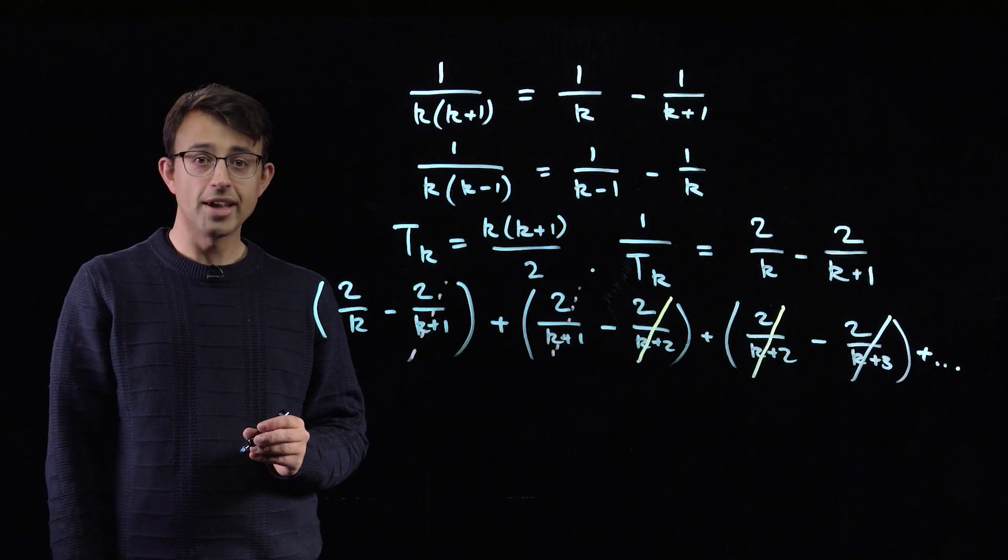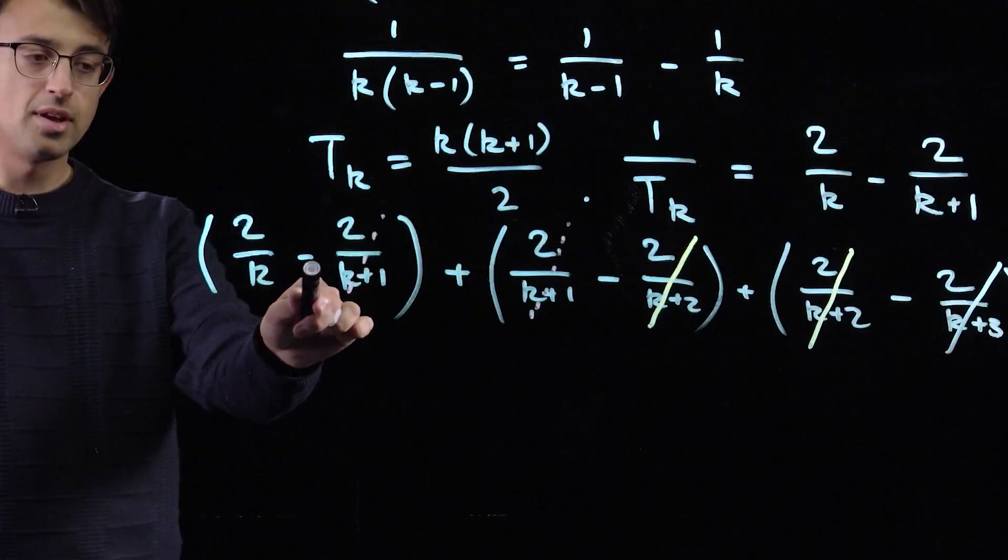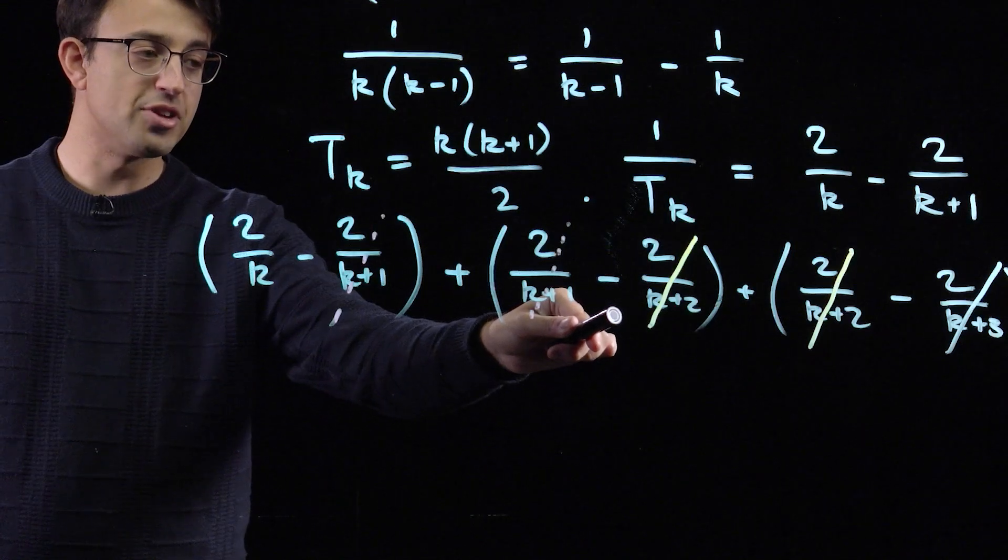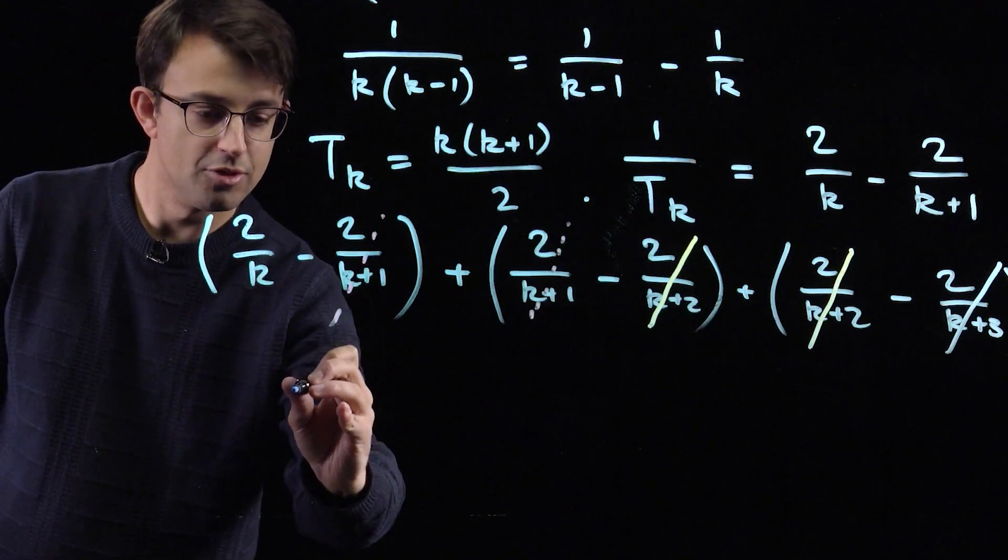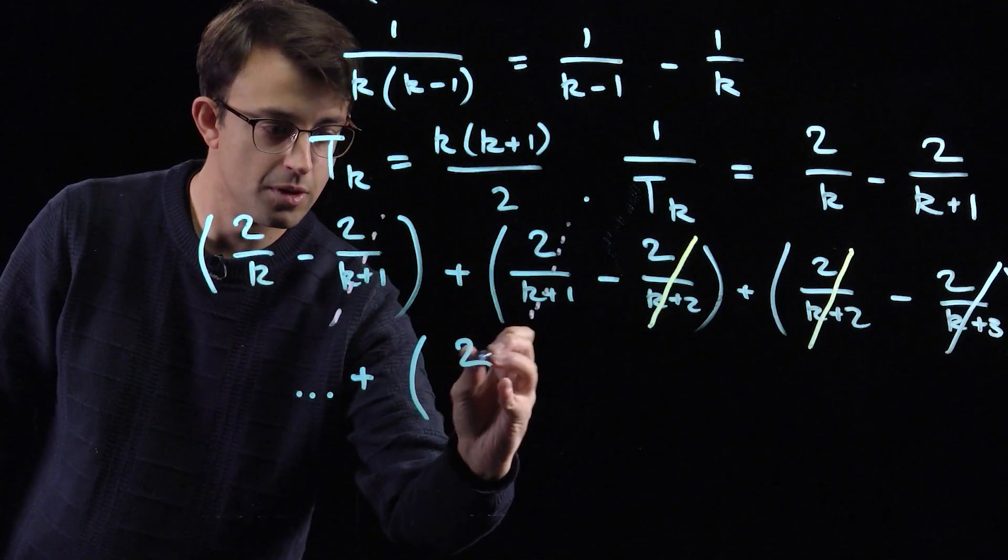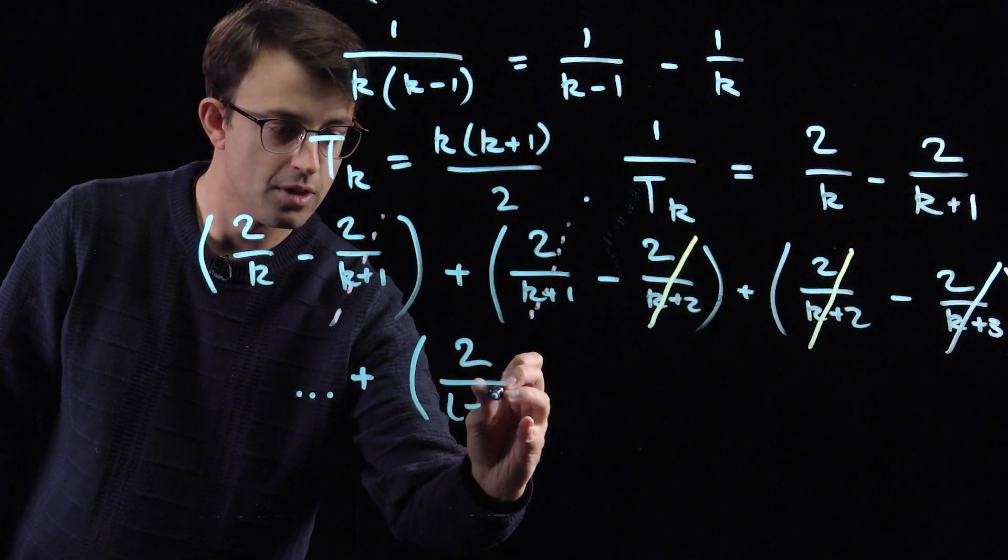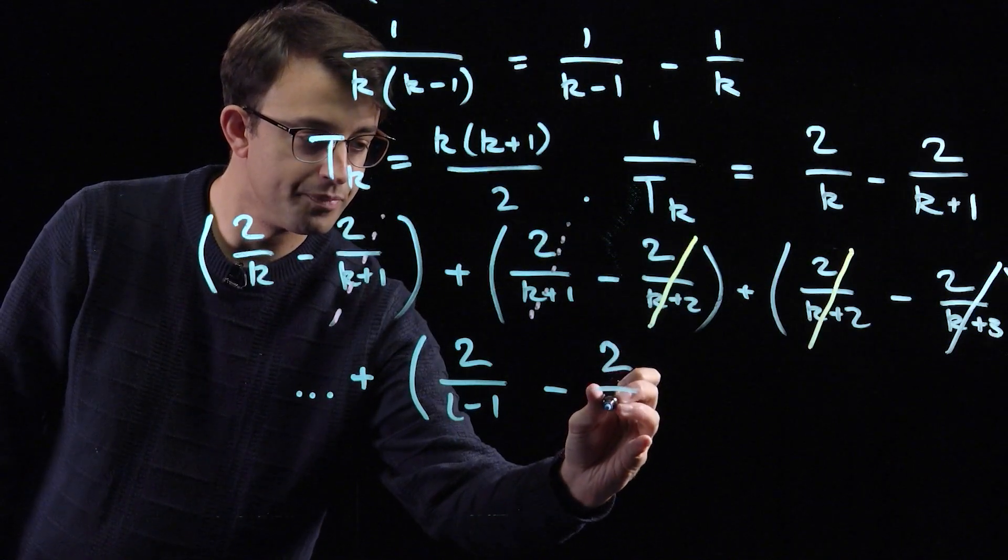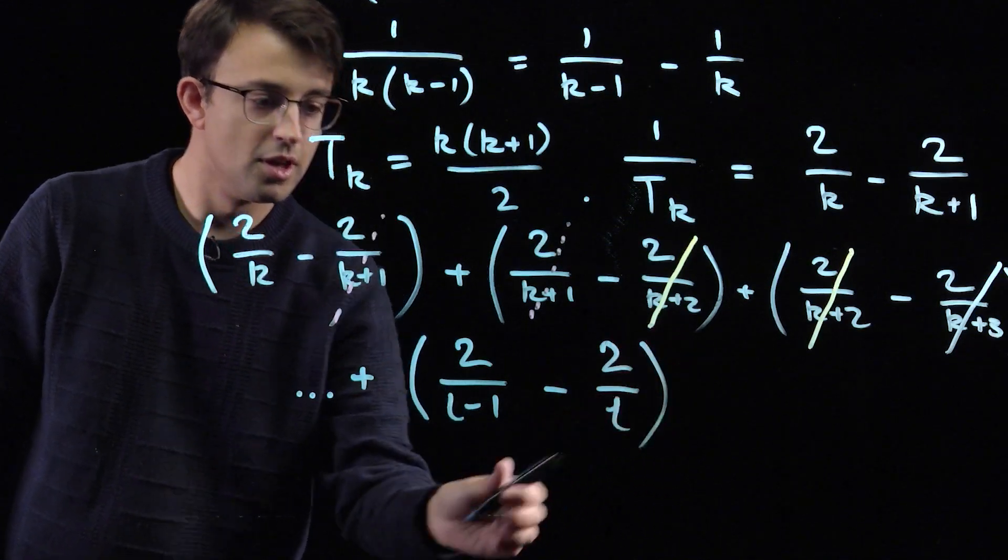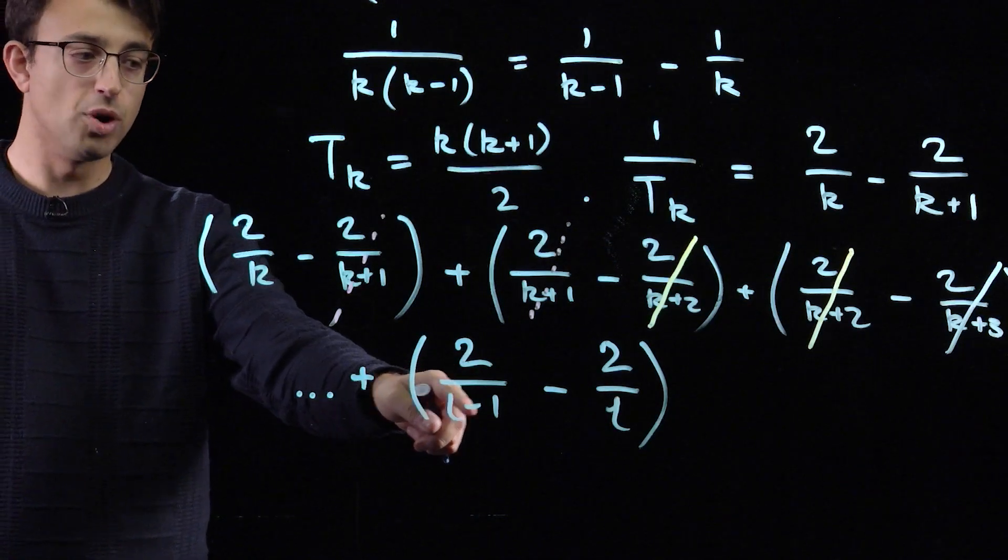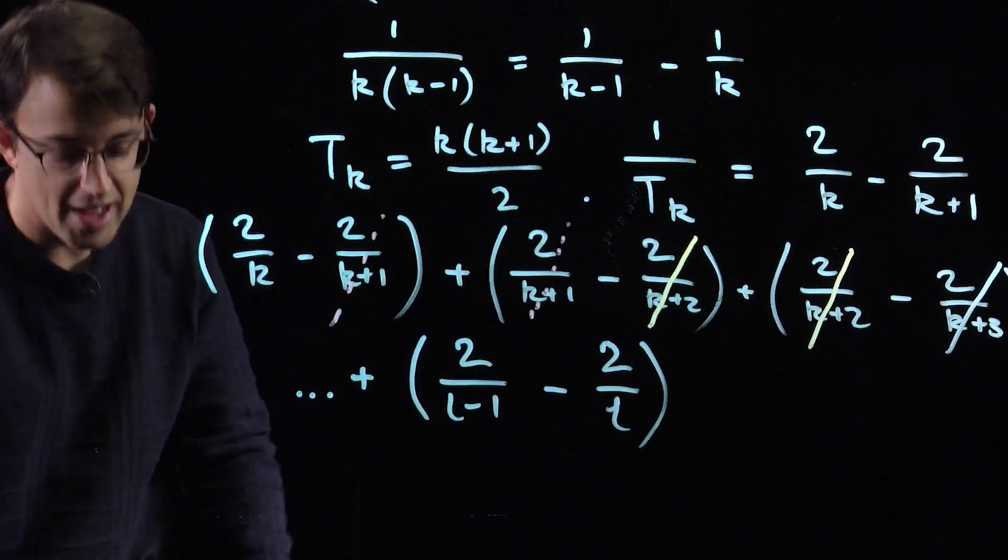The thing is, we can actually just do a finite sum. This is the reciprocal of tk. This is the reciprocal of tk plus 1. So let's continue until the reciprocal of tl minus 1. So the final term in our sum is 2 over l minus 1 minus 2 over l.